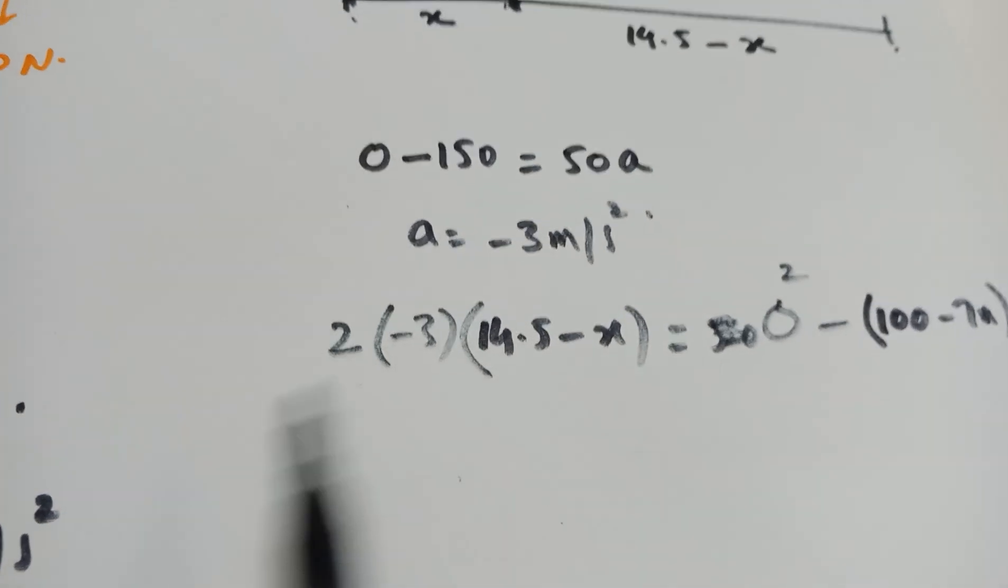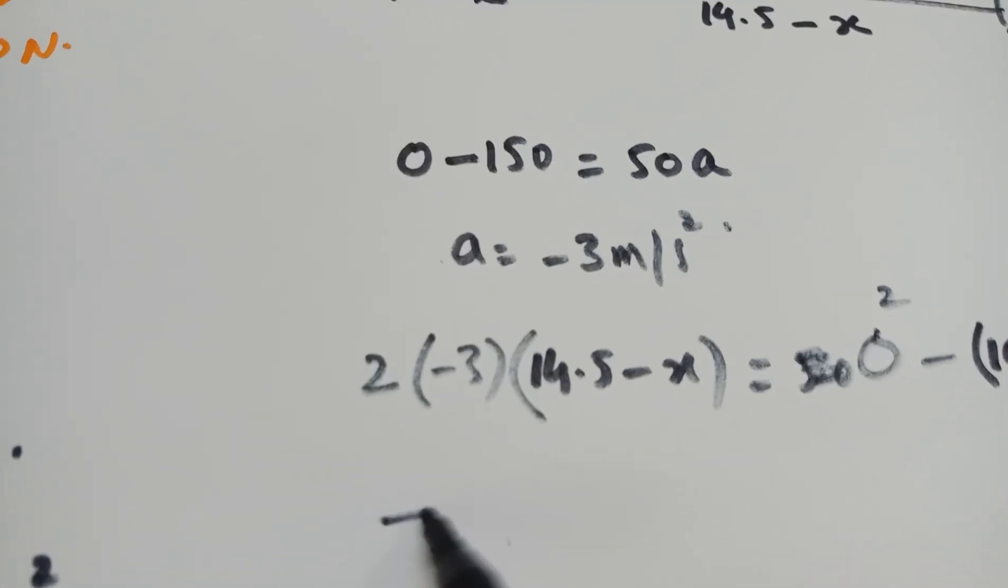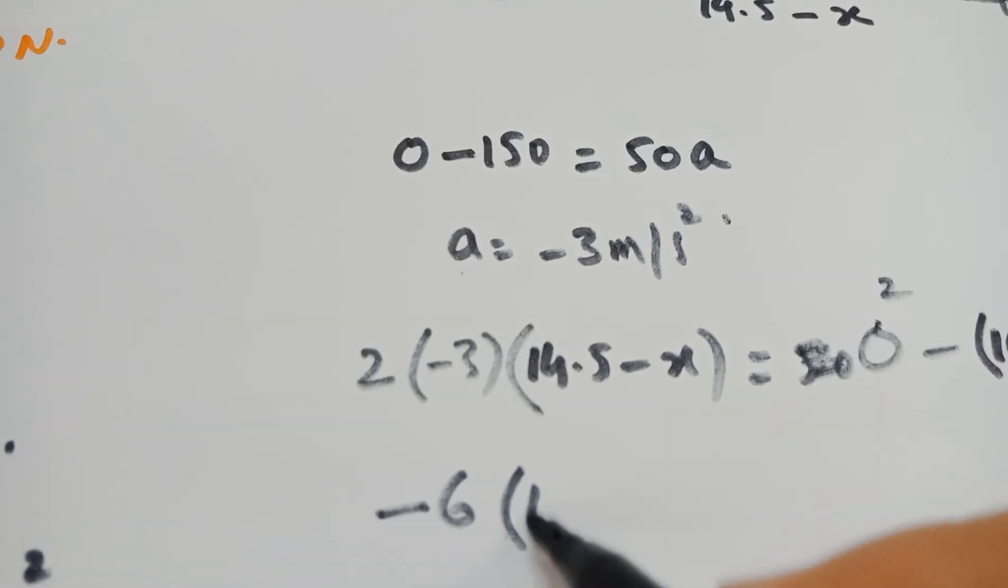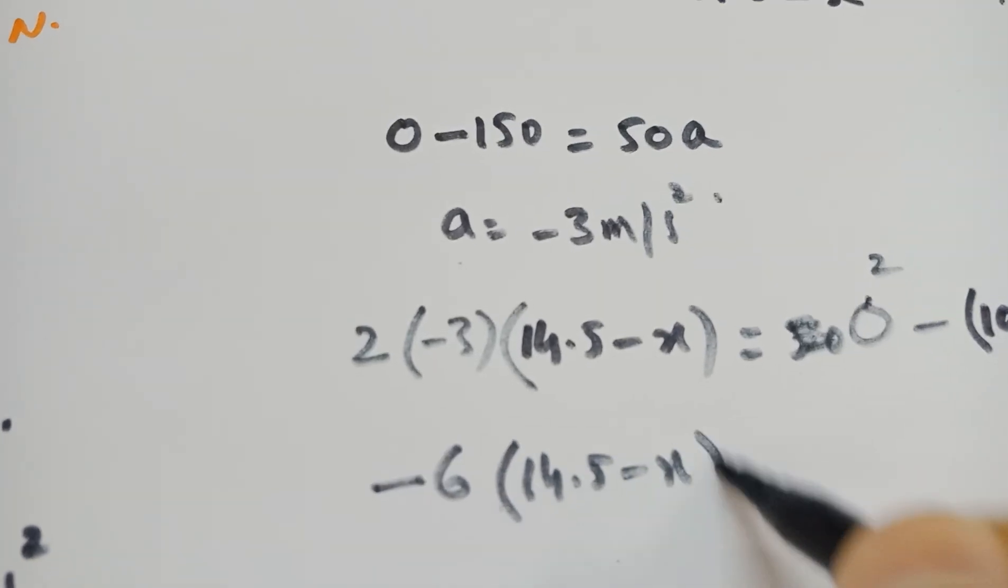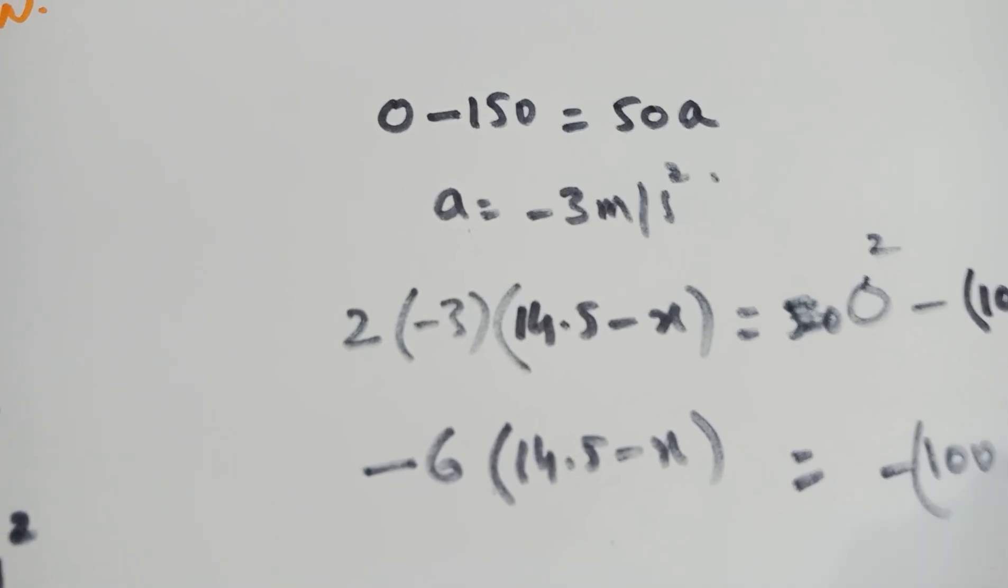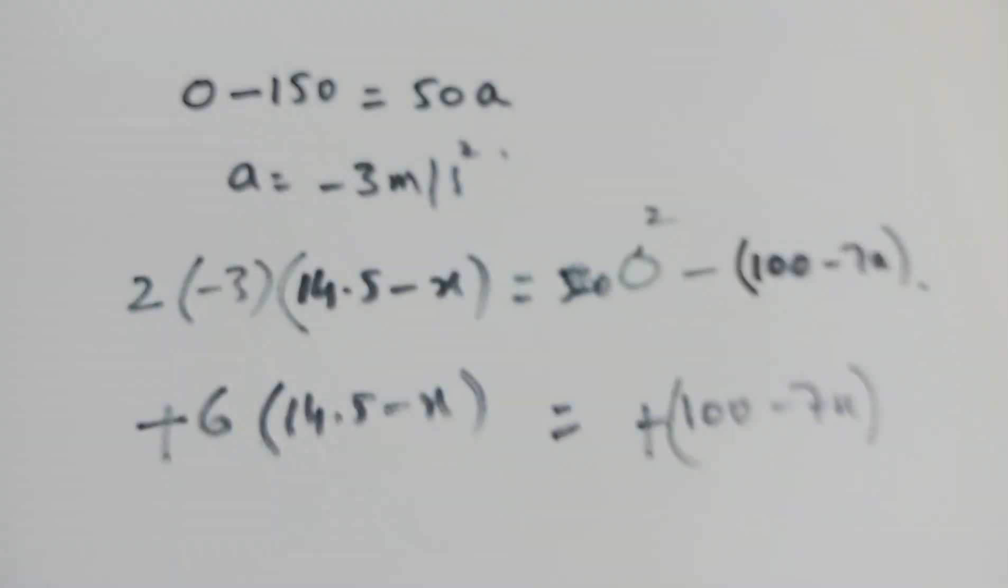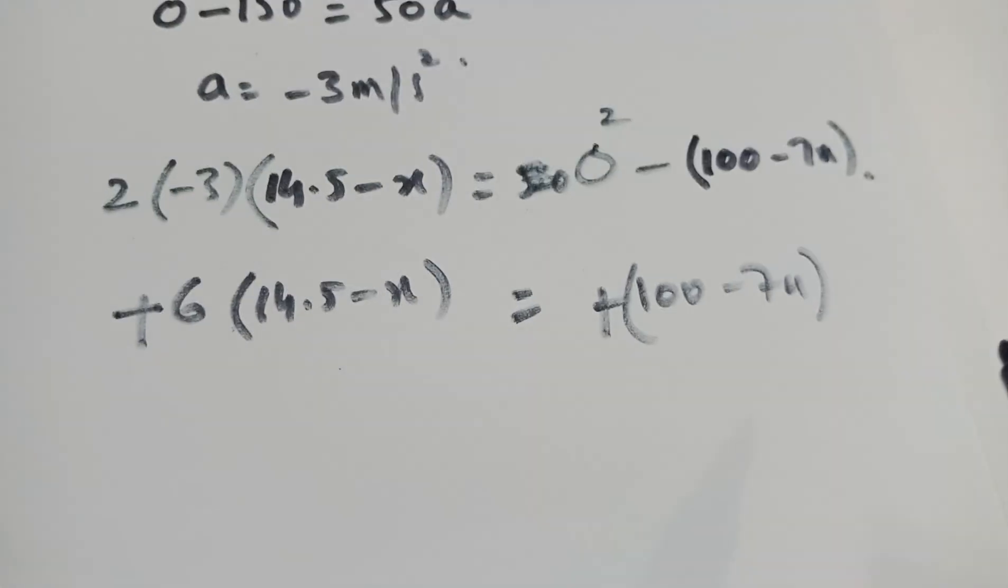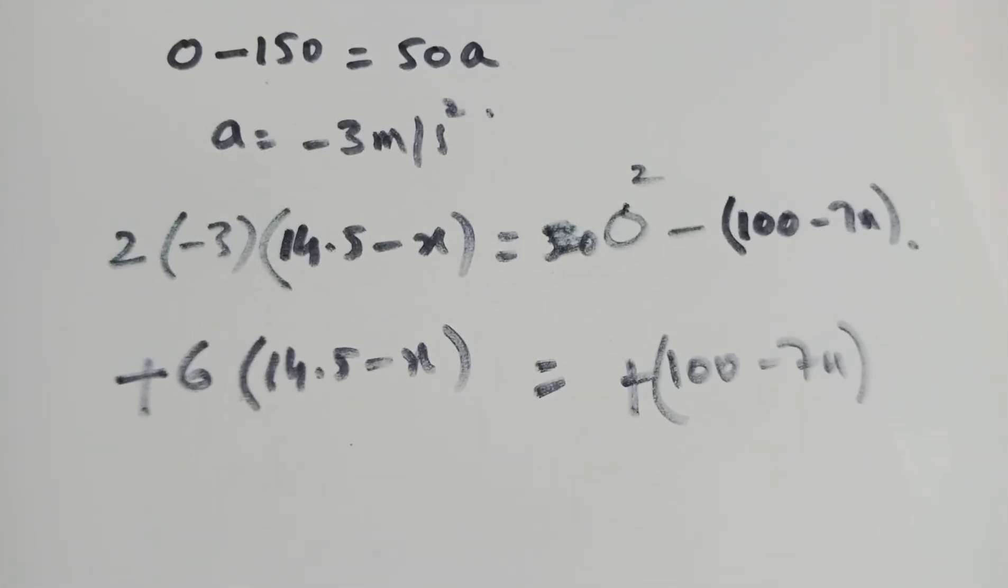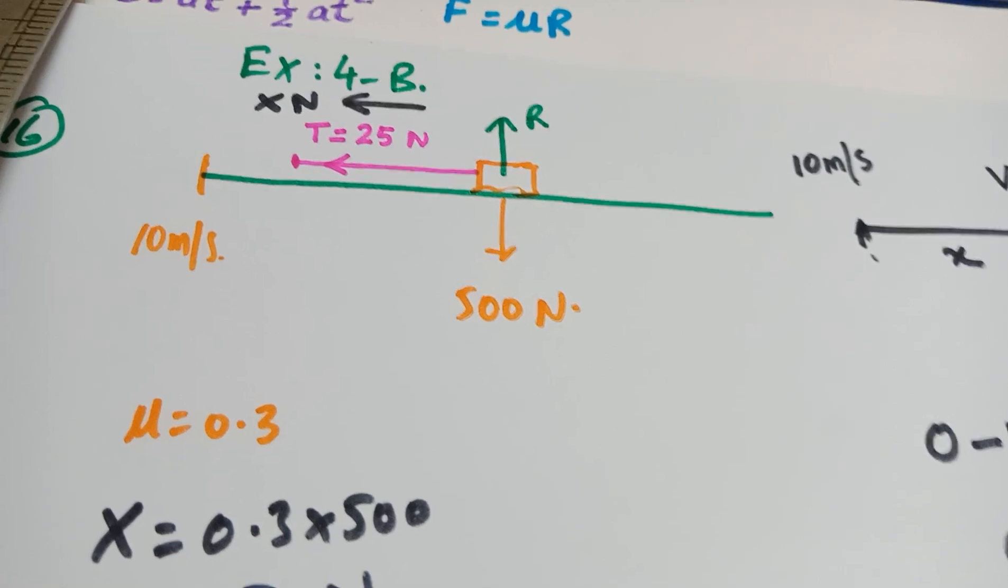So guys, if you solve this equation, let me write this is minus 6 into 14.5 minus X. That is minus 100 minus 7X. So you can cancel this minus with a minus and then you can solve this equation. You will get that distance which was covered when both the frictional force and the tension, they were intact. Thank you very much.